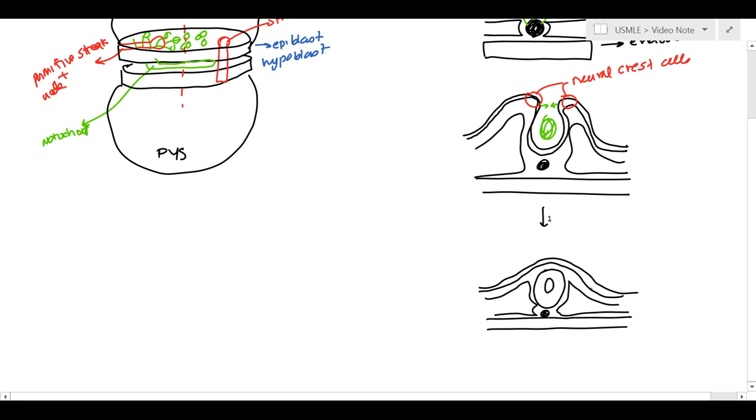Now, these neurocrest cells, before it actually fused, the neurocrest cells actually got away. They actually left, and we're going to come back to what they actually become. And so, this is the formation of the neural tube. Now, this neural tube is what will make the future brain and spinal cord. And the notochord actually goes on to become the nucleus pulposus of the intervertebral disc.